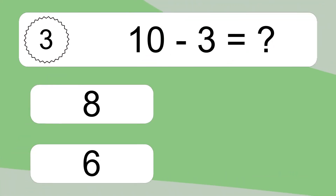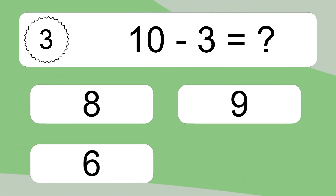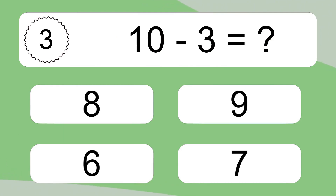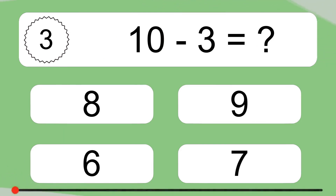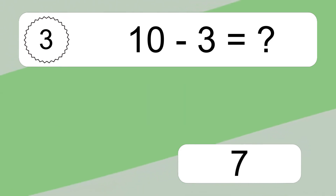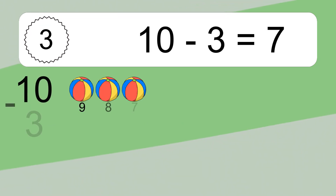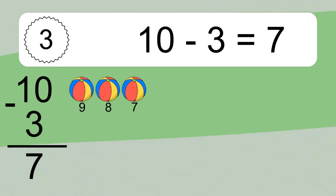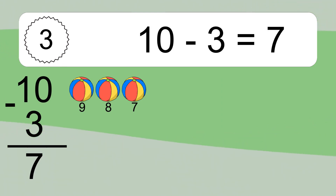10 minus 3 equals what? 10 minus 3 equals 7. Let's count it. 9, 8, 7.